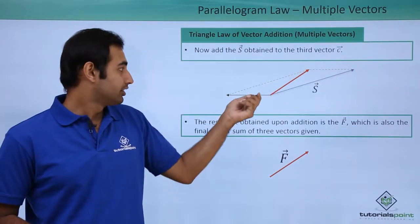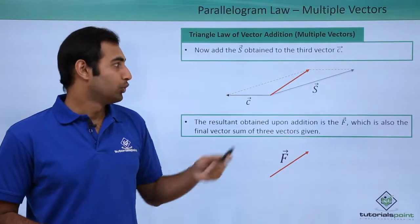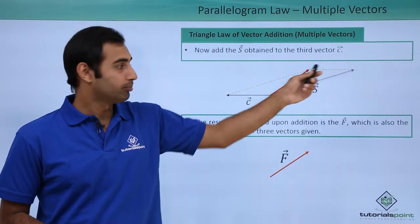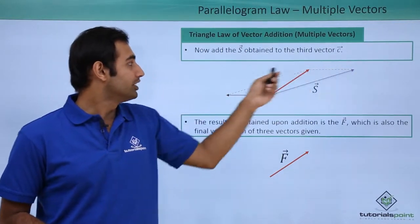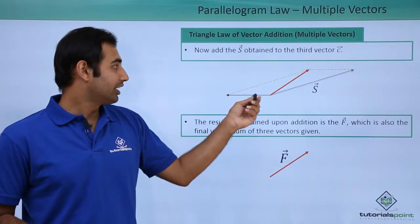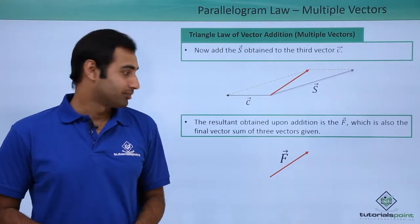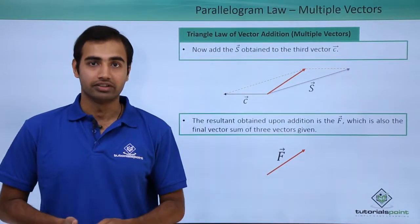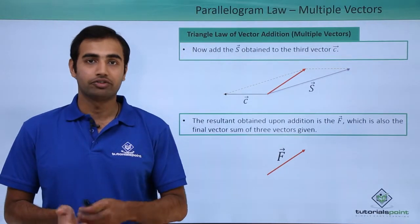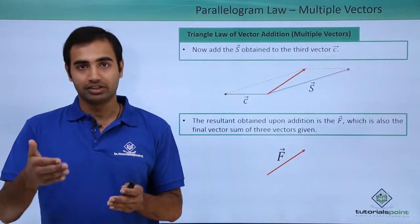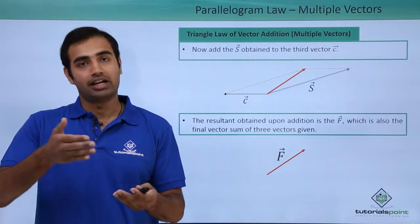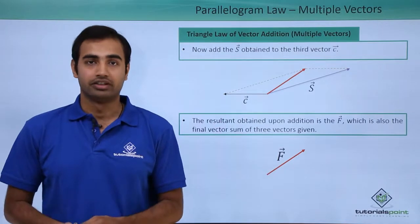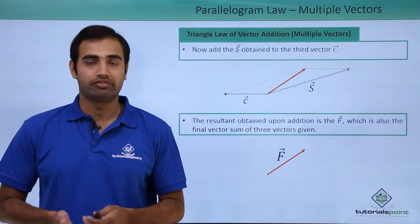I have added the resultant S with the third vector C. Once again I place the two vectors so their tails are coinciding, then complete the parallelogram by drawing lines parallel to C and S. The red vector I obtained is my resultant vector F. If we have more than three vectors — say four or five — we proceed in the same fashion: find the resultant of any two first, add it to the third, then the fourth, and so on until all vectors are exhausted. The final resultant F is my final sum.